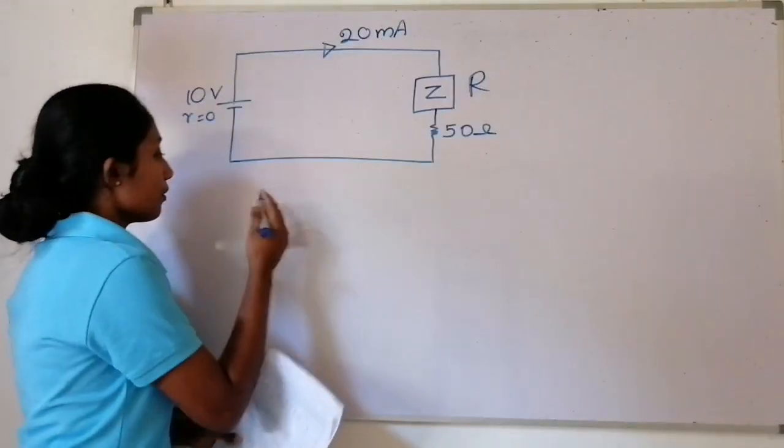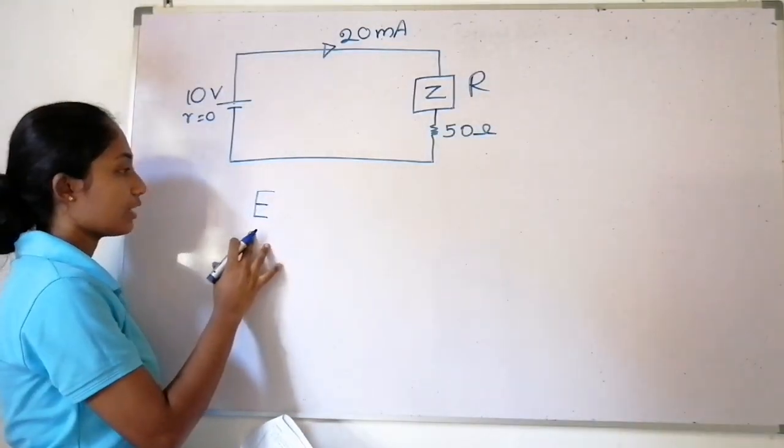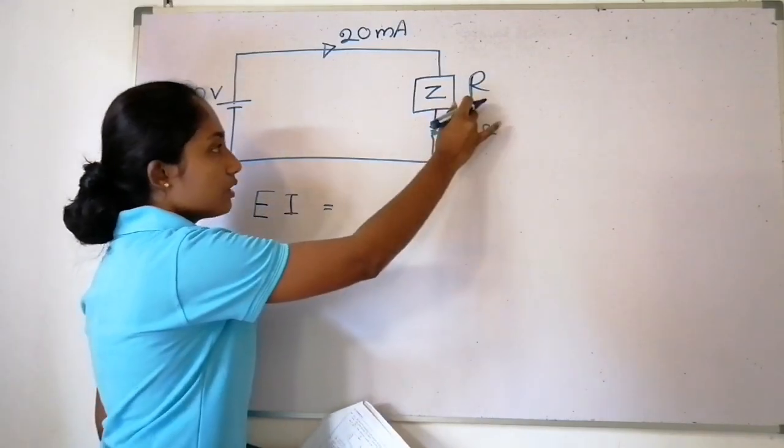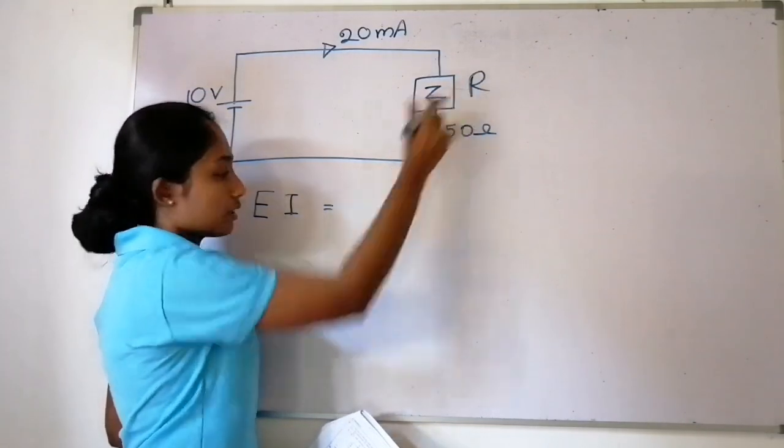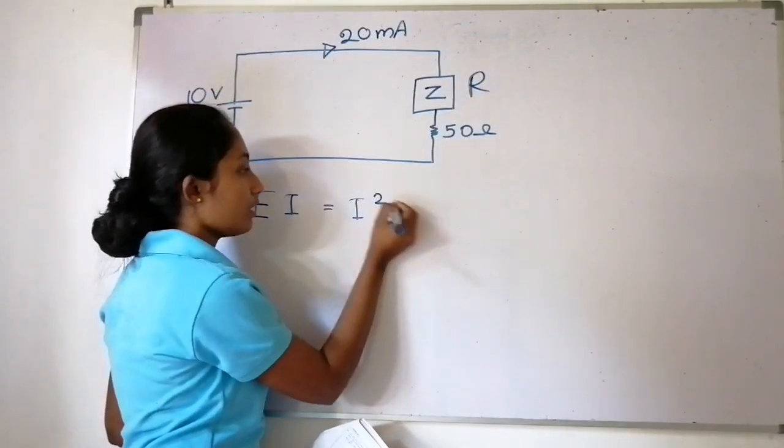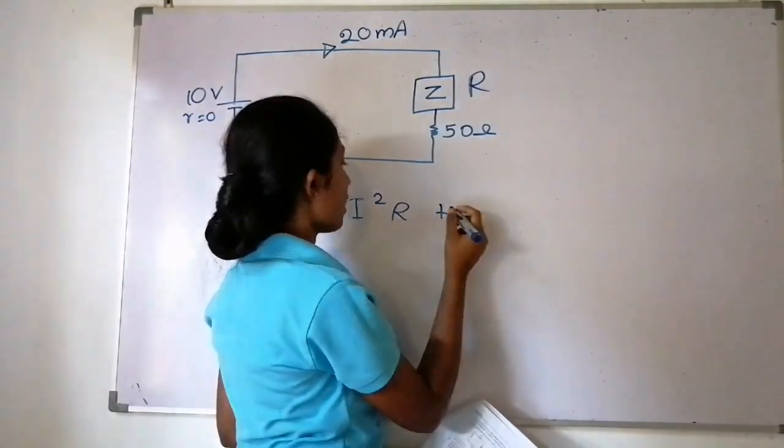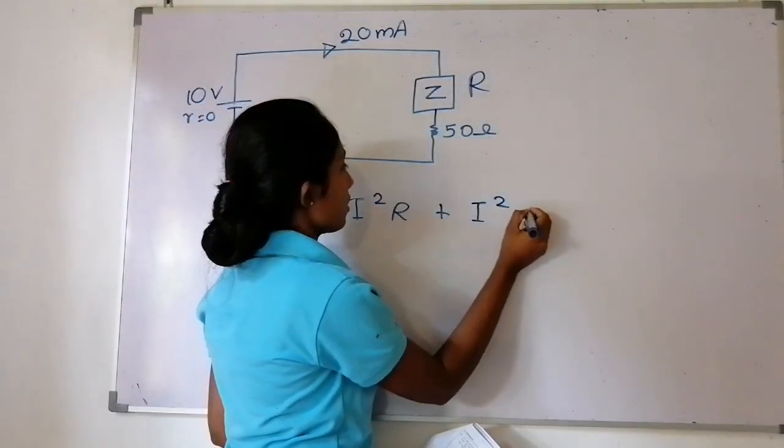So we can write the current I equals the voltage divided by resistance. I equals V over R. Using the values given, we have I equals 10V divided by R.